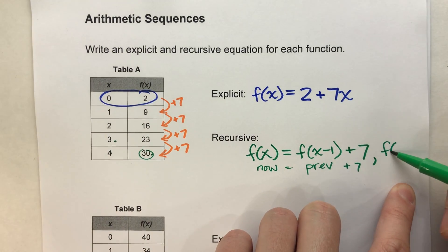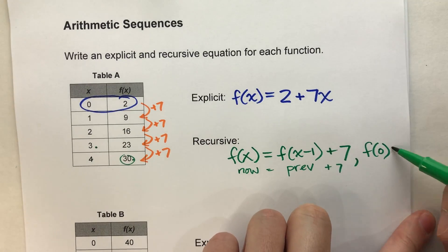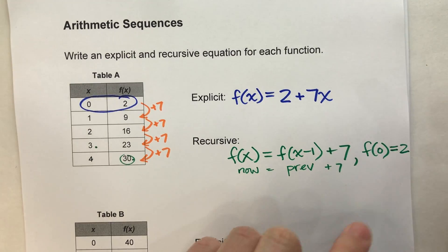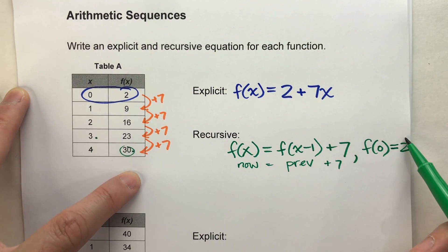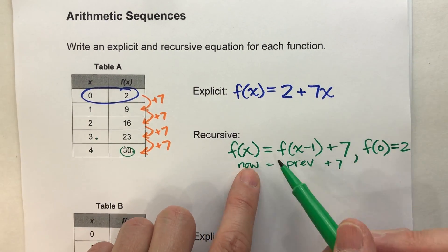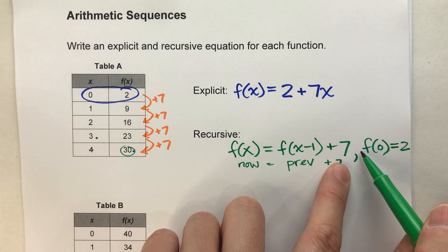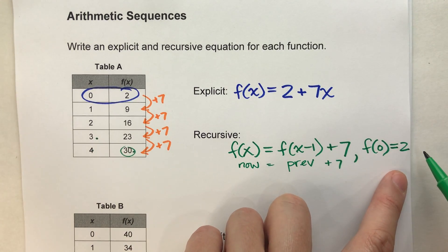In this case, our sequence at 0 started at 2. So in other words, f of 0 equals 2. And that is our whole recursive equation. F of x is equal to f of x minus 1 plus 7, and f of 0 is 2.